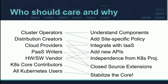Distribution creators will want to know how to integrate with infrastructure as a service. Cloud providers especially will want to integrate with their own infrastructure as a service, maybe add new APIs that expose unique or specific features of their cloud. PaaS authors, because Kubernetes is a good platform to build platform as a service on top of, may want to add new APIs but still be able to dive down into Kubernetes for debugging. Hardware and software vendors may want to add new APIs or expose unique storage or network features.